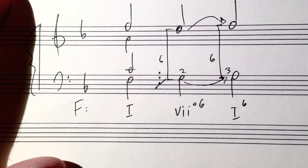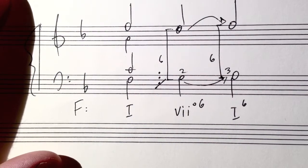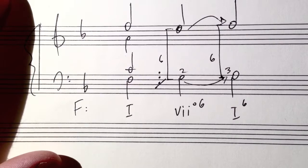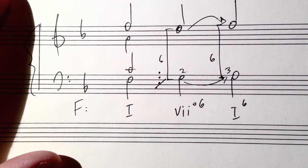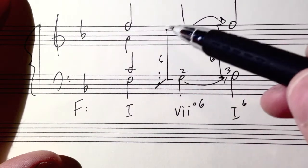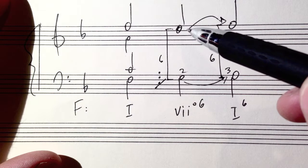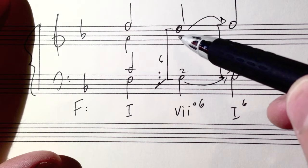These are parallel sixths, which is pleasing motion. Parallel thirds, parallel sixths, and tenths make for good parallel motion.